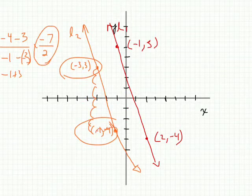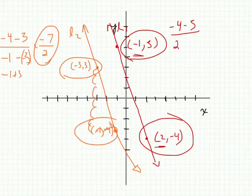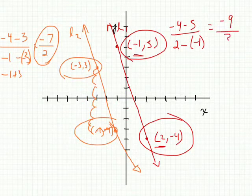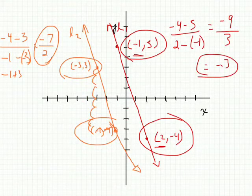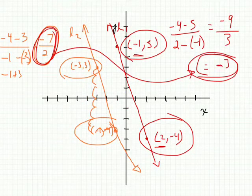What's the slope of the red line? We'll call this the first coordinate and this the second. y2 minus y1: negative 4 minus 5, and x2 minus x1: 2 minus negative 1. That gives us negative 9 over 3, which equals negative 3. So, is negative 7/2 the same as negative 3? No — so these lines are not parallel. For lines to be parallel, they must have the same slope, and negative 7/2 is not the same as negative 3.